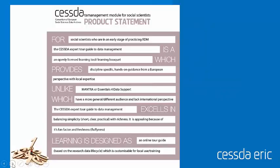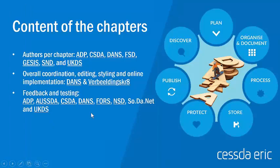In the May workshop, we created a project statement, which was very important because we finalized the target audience. We said we would address early career social science researchers, and we would not be like Mantra or Essentials for Data Support, because we targeted researchers but also because we wanted to have European perspectives in the online module. The content of the chapters follows the research data lifecycle.